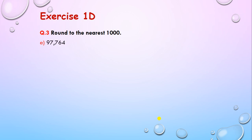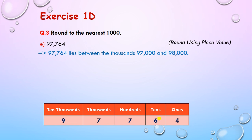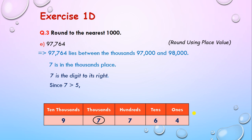Let's solve one more example: 97,764. We will solve this using a place value chart. As we have to round this number to the thousands place, let's check which digit is there — it lies between 97,000 and 98,000, and 7 is at the thousands place. The digit to the right of 7 is also 7. Since 7 is greater than 5, we round to the next thousand. So 97,764 rounded to 98,000.